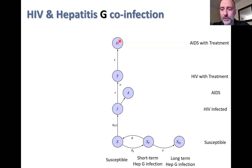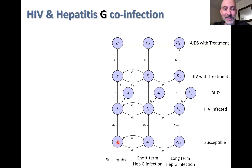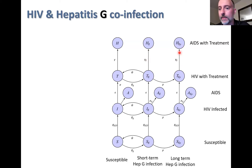We take this HIV model and tack on a second direction to account for hepatitis G infection. Looking at the epidemiology of hepatitis G, two things occur: people get infected with hepatitis G and then clear the infection, going back to the susceptible category; or, for some unknown reason, a certain proportion of the population has long-term infection without clearing the virus—but it still causes no negative effects. This gives dynamics of going from susceptible to short-term infection, long-term infection, or back to the susceptible state. We then extrapolate this for all HIV categories, giving a co-infection model.